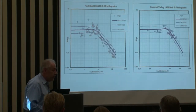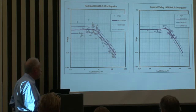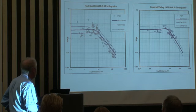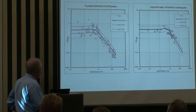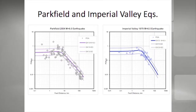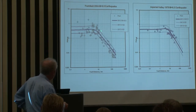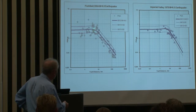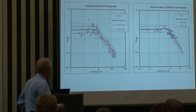Now let's look at these first two. Do they have a bump at a certain distance? I would say yes. There is some increase in amplitudes at certain distances, and this bump is actually magnitude-dependent. Basically, the bigger the magnitude, the farther is this corner distance, which is another difference in our model.